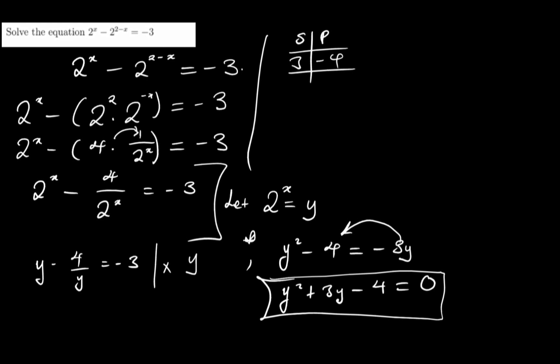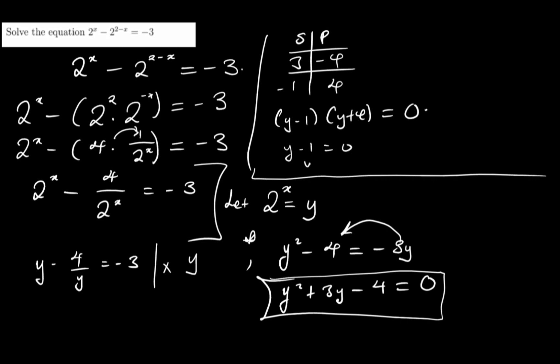What numbers have a product of negative 4 and sum of 3? That would be 4 and negative 1. So since the leading coefficient is 1, we factor as (y minus 1)(y plus 4) equals zero. Therefore y equals 1 as the first value, and y equals negative 4 as the second value.